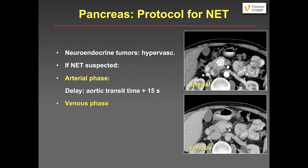For patients with suspected neuroendocrine tumors of the pancreas, we use a slightly different protocol because neuroendocrine tumors are very hypervascular. If we suspect a neuroendocrine tumor, we perform a real arterial phase with the aortic transit time plus 15 seconds delay — roughly the same delay as for a liver arterial phase — and then the venous phase. Here is a typical example of a neuroendocrine tumor in the pancreatic head: very bright in the arterial phase and almost isodense in the venous phase.